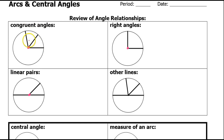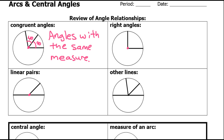Congruent angles are angles that have the same measure. So let's say that this is 40 degrees and this is 40 degrees — those are going to be congruent angles. Just write that down: angles with the same measure.